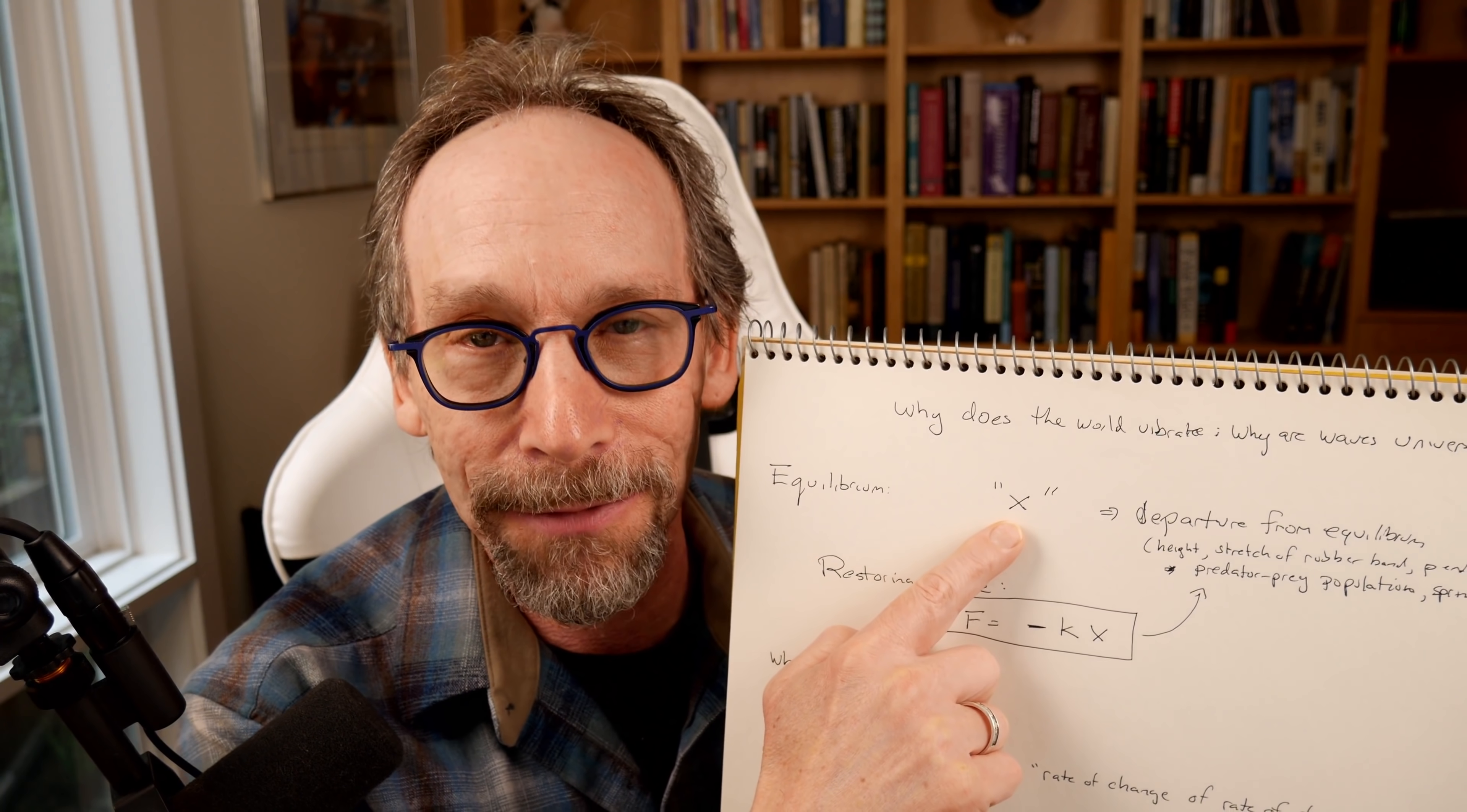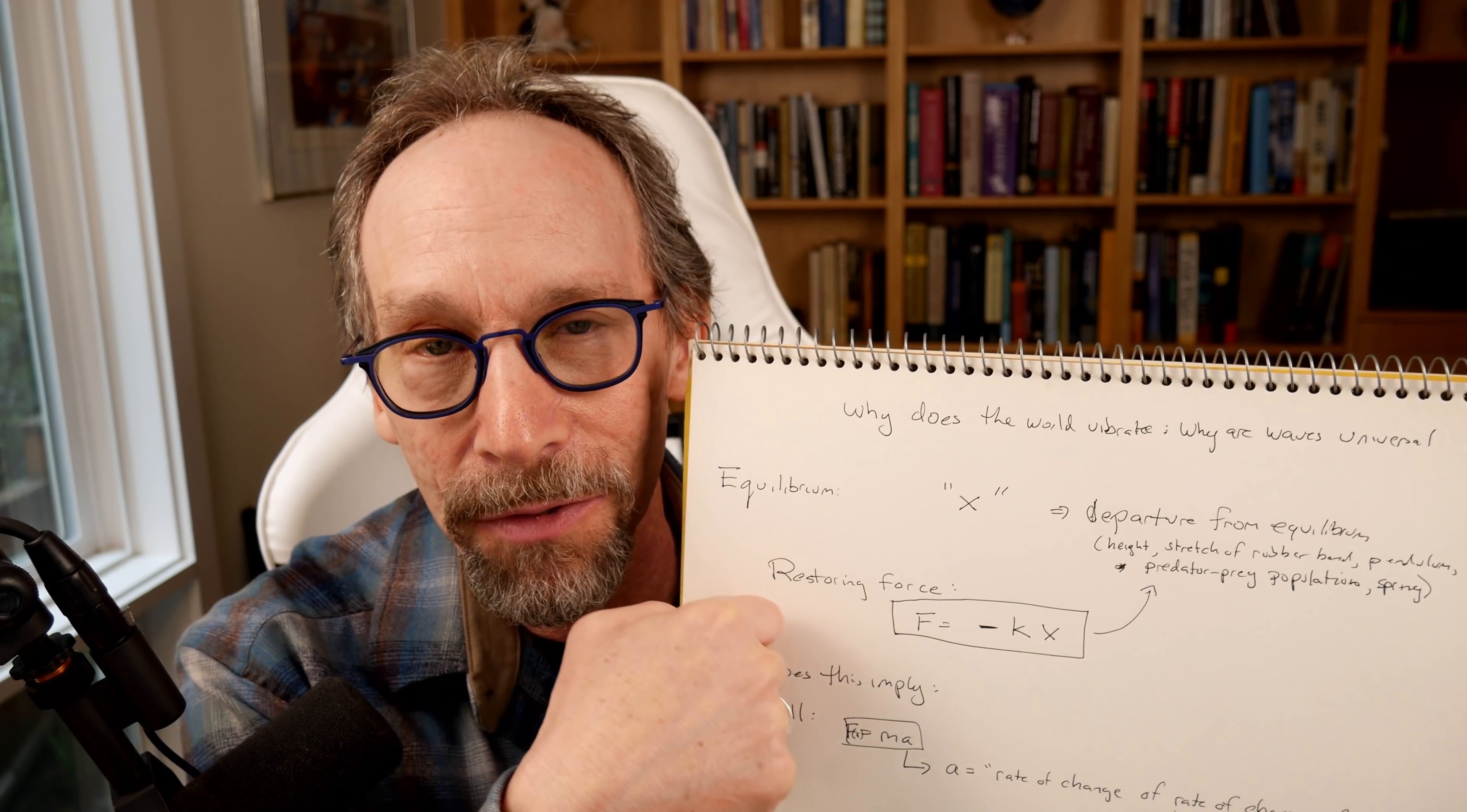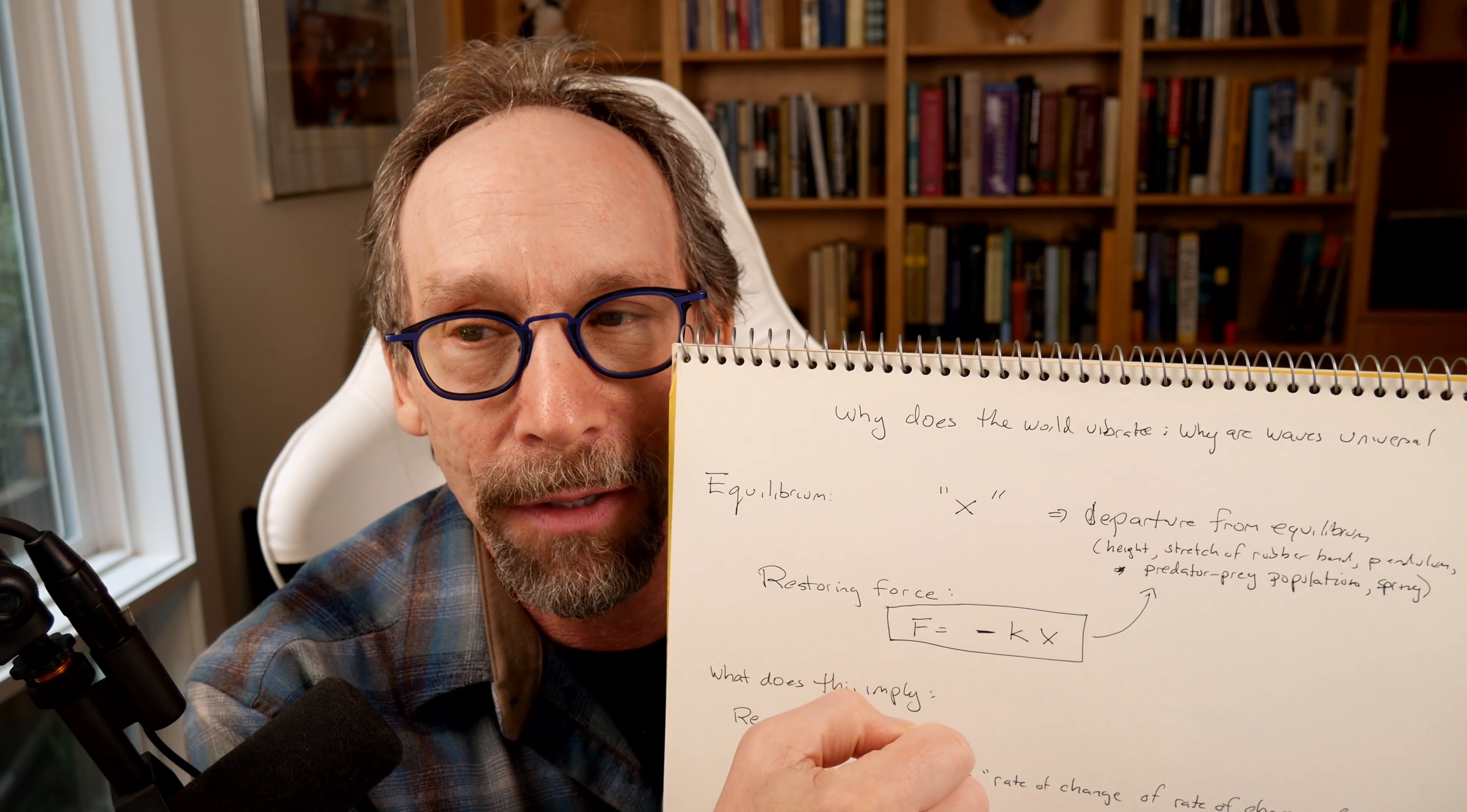We can describe that as follows. Let's define the quantity x. And I love when I talk about x to young kids and I talk about algebra, they say, what does x mean? And the answer is x can mean whatever you want it to be. In this case, I want it to represent generically a departure from equilibrium. It can be the height above the ground. It can be the amount you stretch a rubber band. It can be how you pull up a pendulum from its resting position. Or it can be in the case of predator-prey relationships where you have an equilibrium number of sheep and wolves. If you change the number of sheep, then the number of wolves that can survive will go down. And so that's a departure from that equilibrium position. Or in the simplest case, a spring when you stretch it or press it in. That distance that you do that, I'll call x.